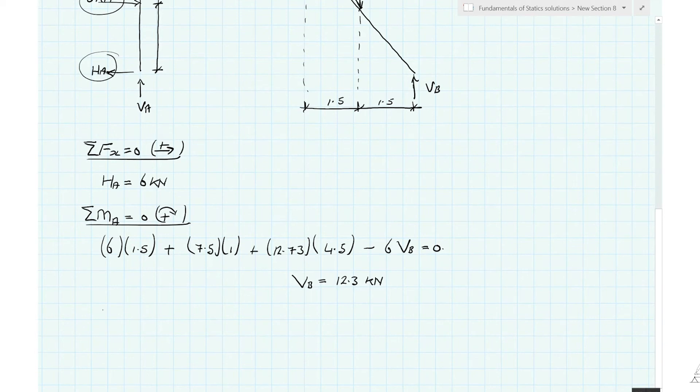Okay, and we can utilize the last equilibrium equation to get VA. So VA is equal to 7.93 kilonewtons, again in the direction assumed.